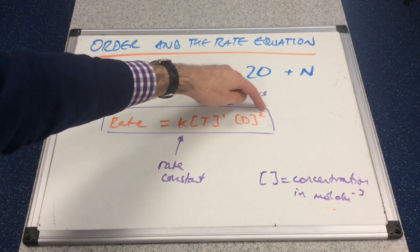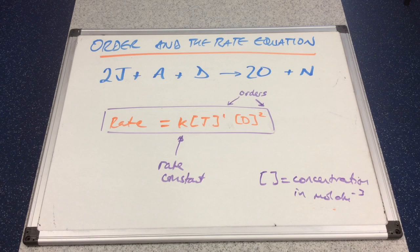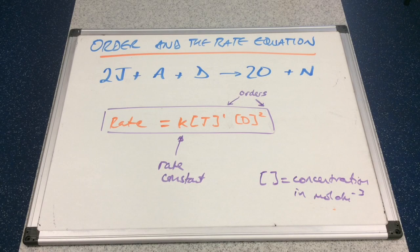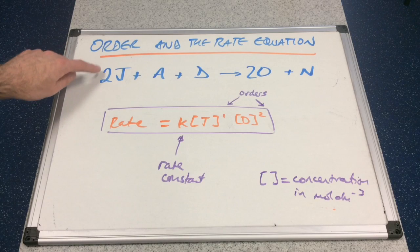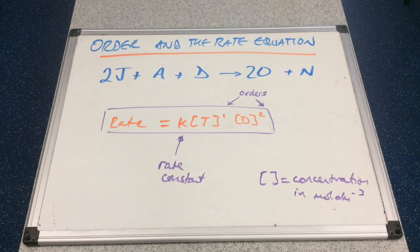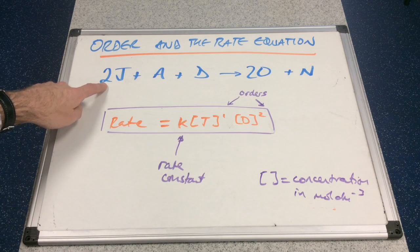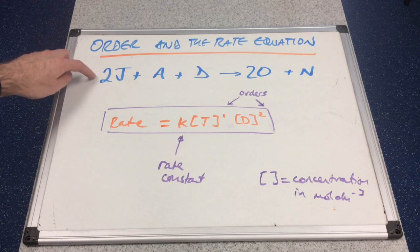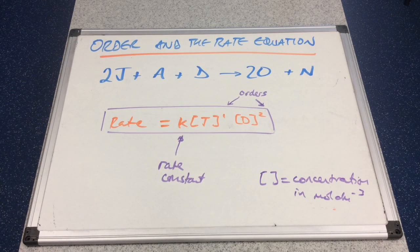The overall order of this reaction would be 3, because the overall order is the sum of the individual orders. Also note: order has nothing to do with the numbers used to balance the equation — the stoichiometric coefficients. There's a 2 in front of J, but it was determined experimentally to be first order. Sometimes students put second order because of the 2 in the balanced equation — you cannot do that.